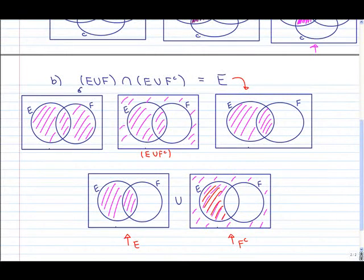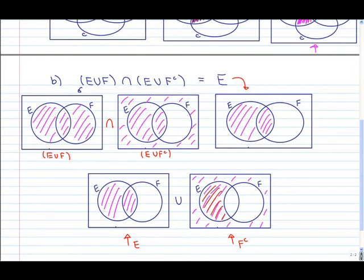Now we want the intersection of these two Venn diagrams: E union F on the left and E union F complement on the right. The intersection means what's in common between both diagrams. The only areas common to both are the center and the part of E — both diagrams have those regions shaded. So the result is exactly the right hand side, and we've shown that the left hand side equals the right hand side.